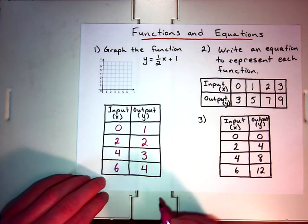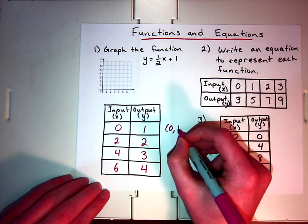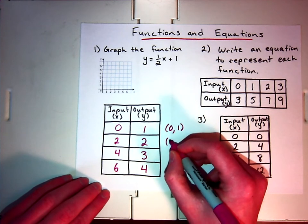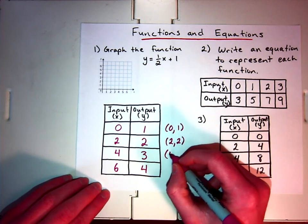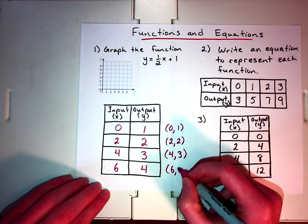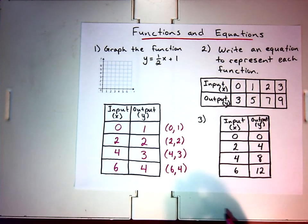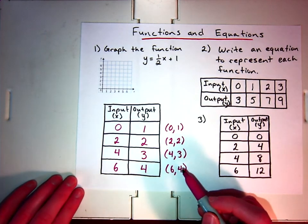And then we can remember these could be made into ordered pairs. I could say, x is 0, y is 1. x is 2, y is 2. x is 4, y is 3. x is 6, y is 4. So we can make these ordered pairs. And when we have ordered pairs, we can graph those.